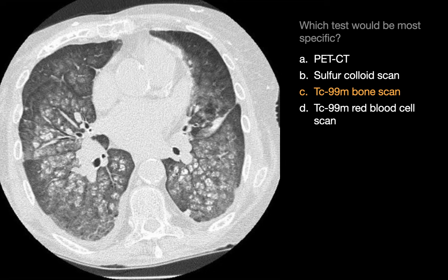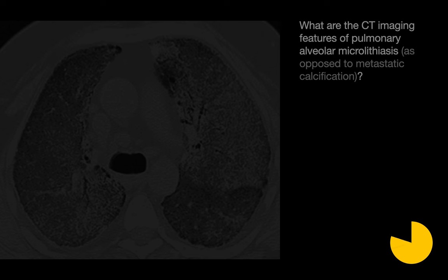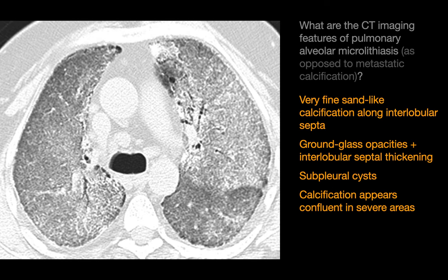Our next question is a point-counterpoint. What are the CT imaging features of pulmonary alveolar microlithiasis, or PAM? Unlike metastatic calcification, which is calcium deposition in normal lung parenchyma, PAM is a rare disorder where calcium deposition occurs in damaged lung parenchyma. Imaging features of PAM include very fine calcifications along the interlobular septi, ground glass opacities with interlobular septal thickening, and septal pleural cysts. In patients with PAM, the calcifications can sometimes become confluent in severe areas.